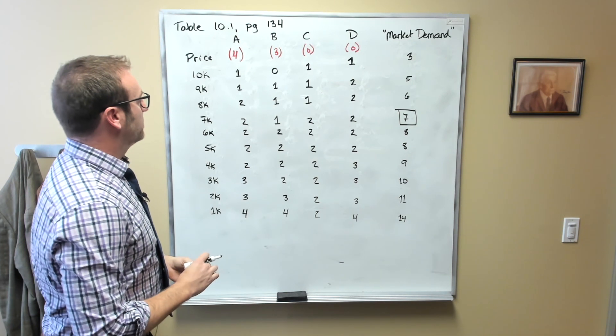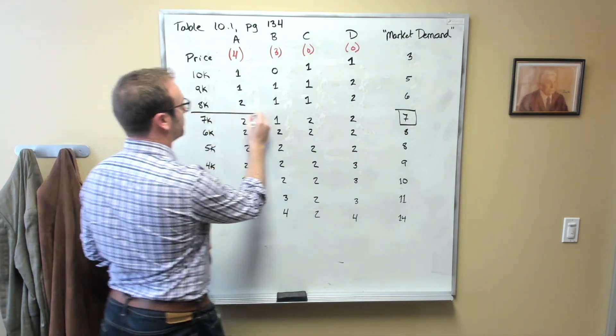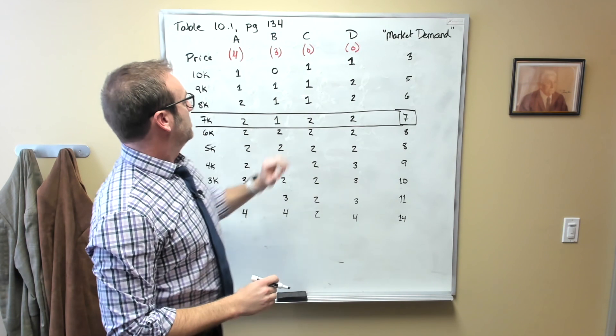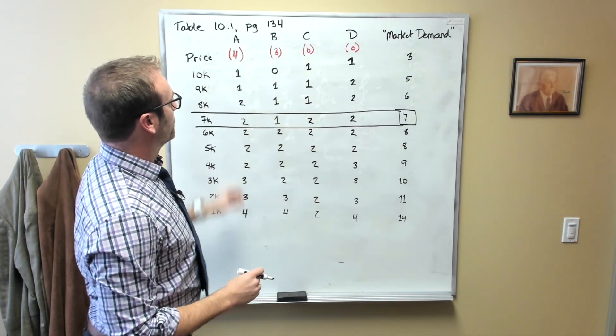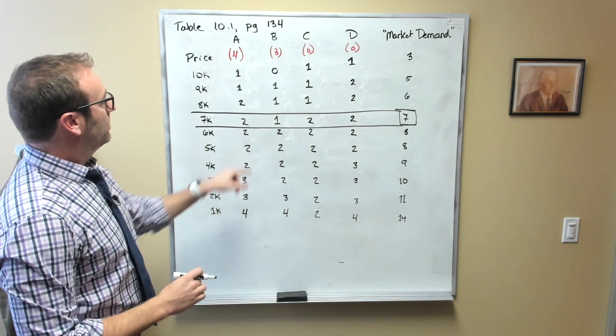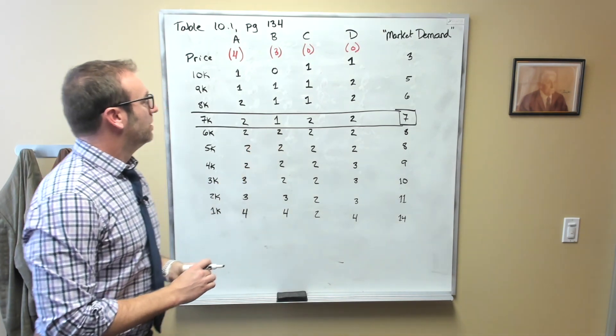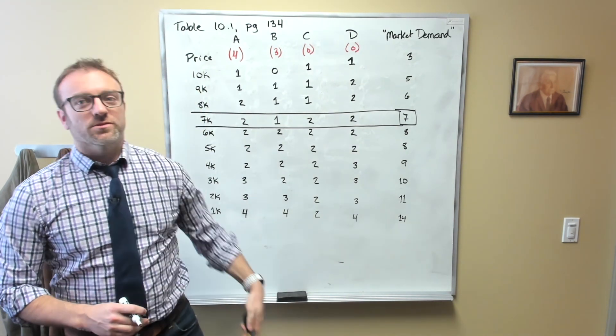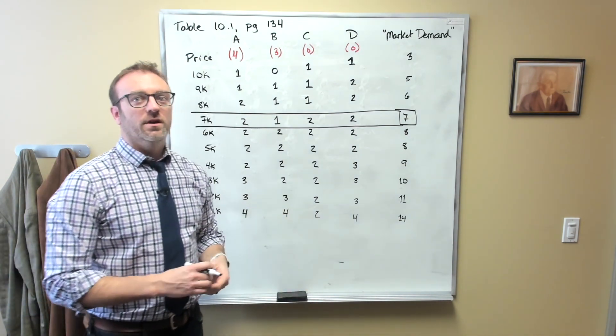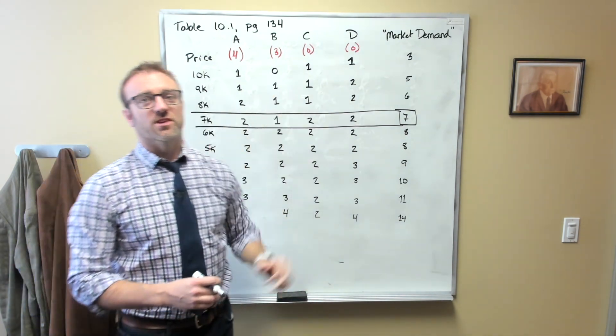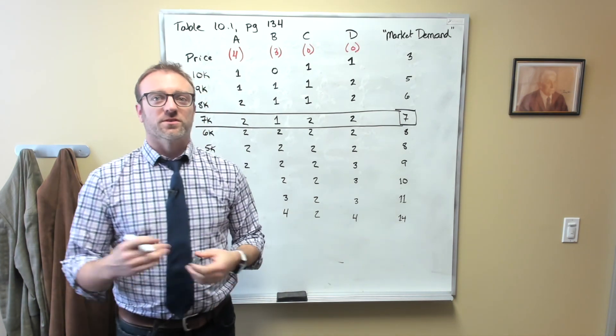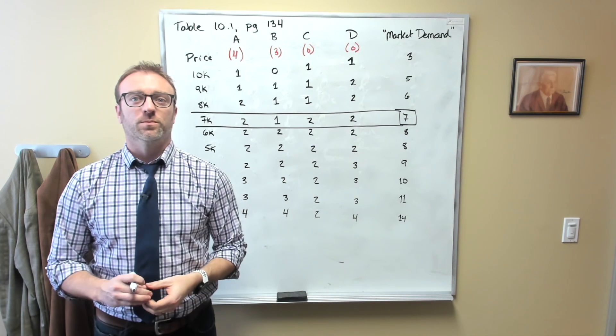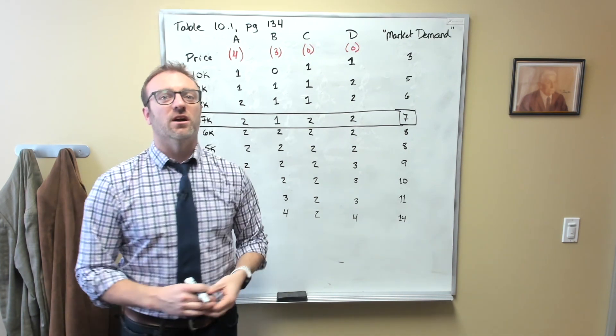Here, since there are seven, what we would notice is that this right here is the same number of cars that actually exists. So what would happen in this market is the price of cars would converge on $7,000 with persons C and D each buying two cars from either person B or person A, leaving them with two cars for person A and one car for person B. And this would make everyone here better off.